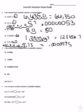Number six, you need to move the decimal behind the first number, so you're going to move it one, two times, and you get 7.882 times 10 to the negative second power.